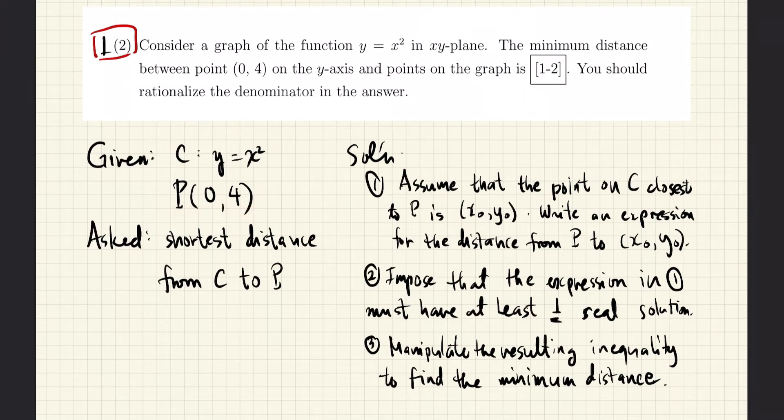If there are two solutions, then there are two points closest to P. Finally, we manipulate the resulting inequality to find the minimum value of the distance.